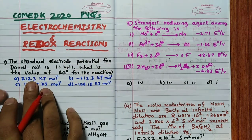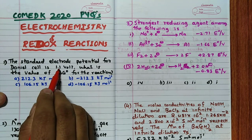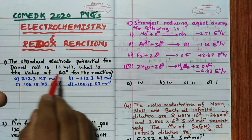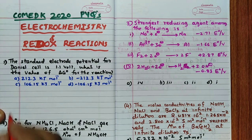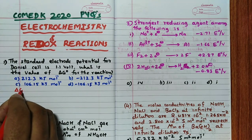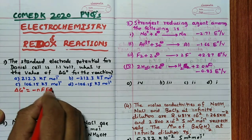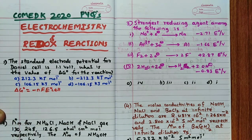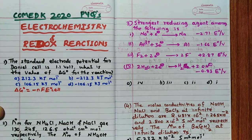The first question: the standard electrode potential for the Daniel cell is given as 1.1 volt. What is the value of ΔG° for the reaction? The formula is ΔG° = -nFE°cell, which means the answer should be negative, so options A and C can be eliminated immediately. Remaining options are B and D.